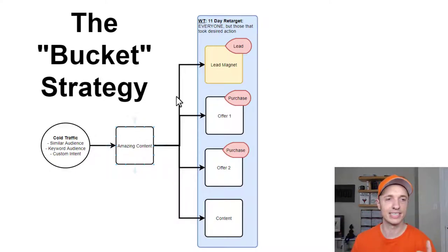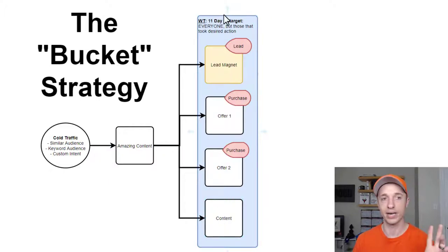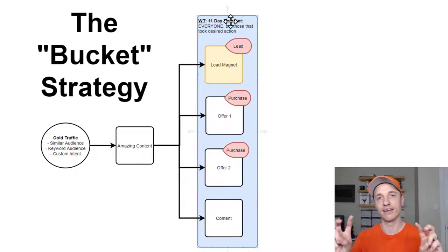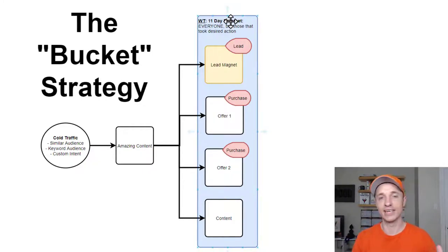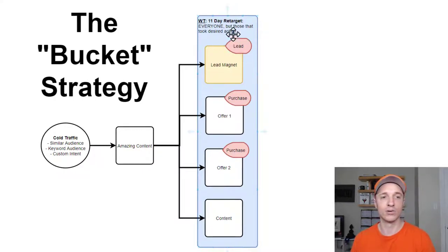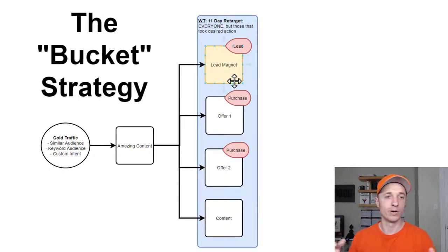You bring them to amazing content, and then you have this bucket over here — it's an audience of warm traffic. In this particular case, I call it an 11-day retarget. You might have a 3-day, 7-day, 11-day, 14-day, or 30-day retargeting window — it just depends on how you want to configure it. But for those 11 days, for example, we're going to be showing this group of people that we're retargeting different offers.